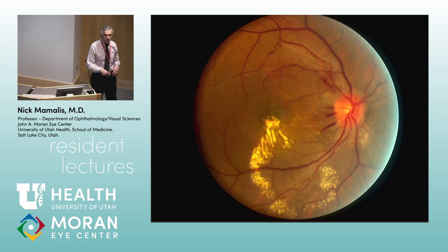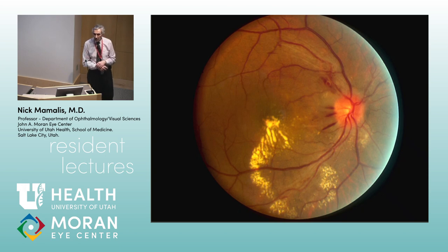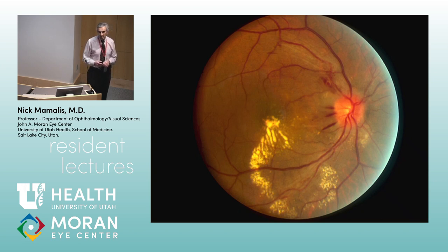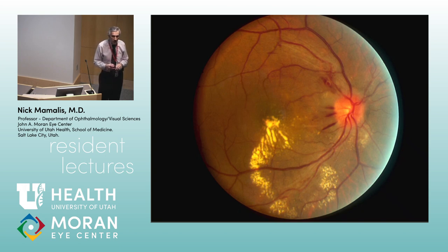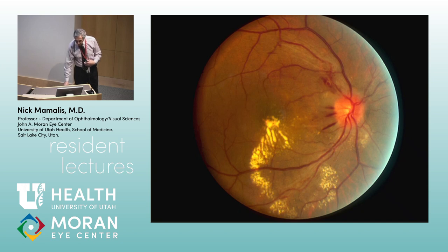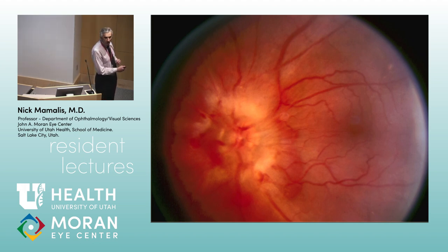Hard exudate is protein-rich and lipid-rich — you get leakage of fluid, the fluid eventually gets reabsorbed, but the proteins and lipid stay, giving yellowish hard exudate. The star shape indicates it's in the macula. Also note disc margin blurring — technically not papilledema but disc edema. Papilledema by definition is optic nerve swelling due to increased CSF pressure. In severe hypertension you can get disc swelling as well.